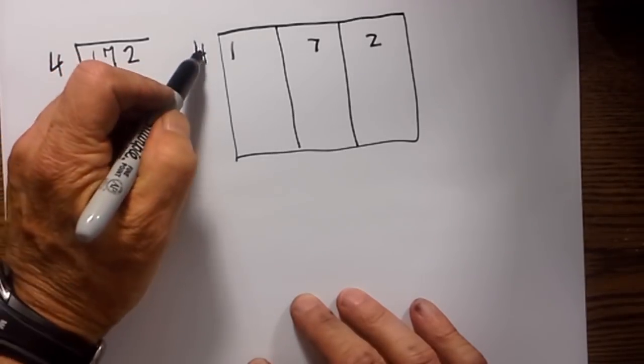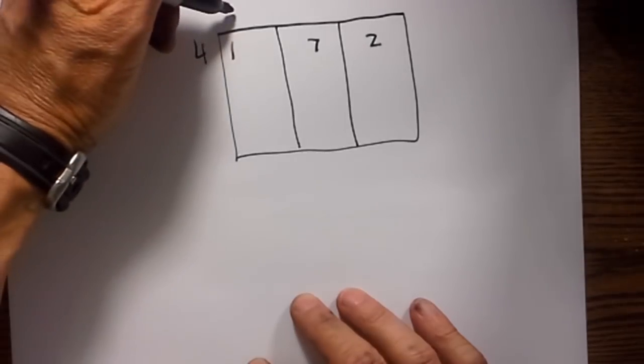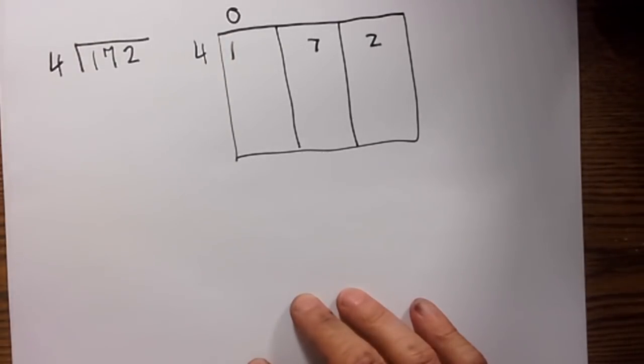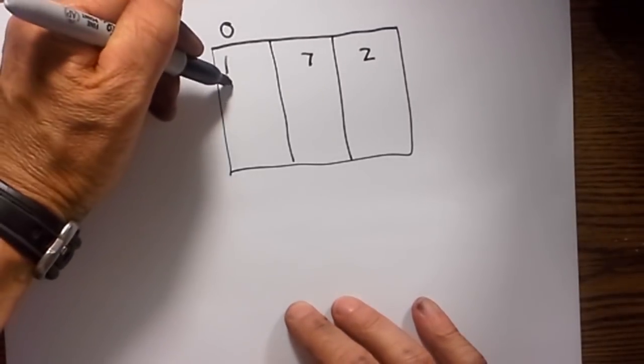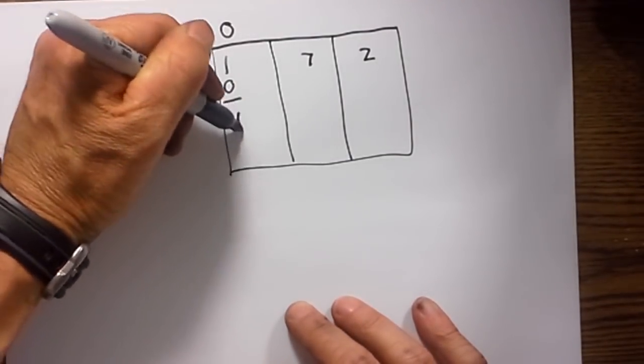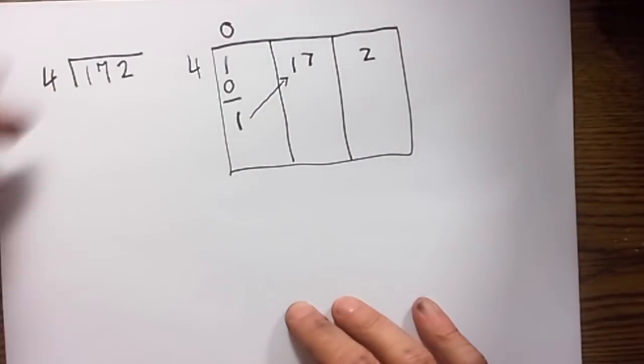Let's begin. Four goes into one. Four is larger than one, so we'll place a zero on the top. Next, zero times four is zero, so that gives you one. You then move the one to the next column.